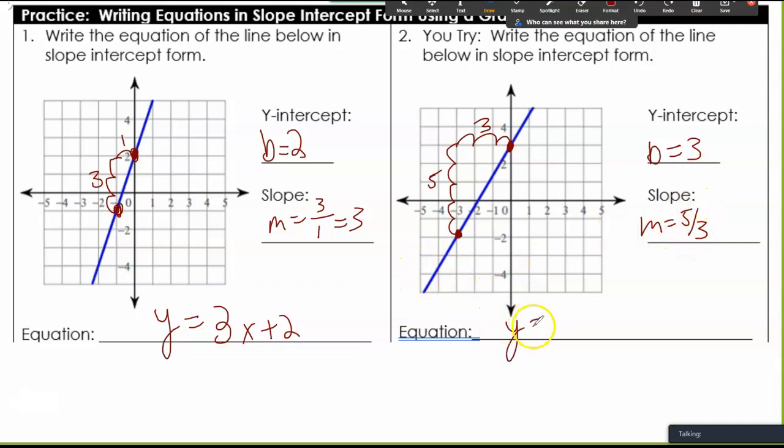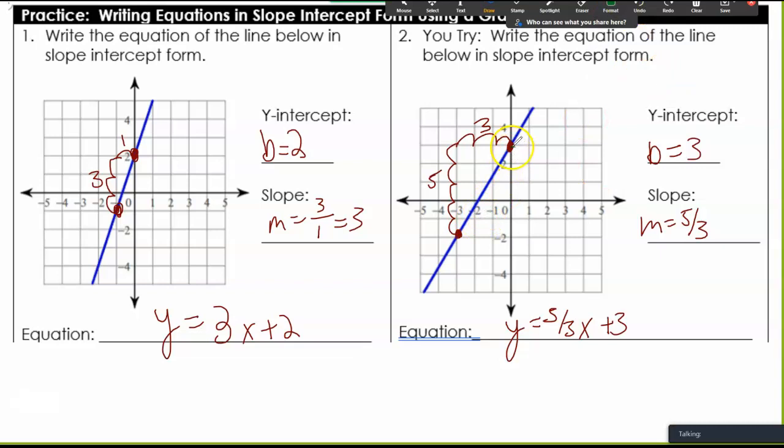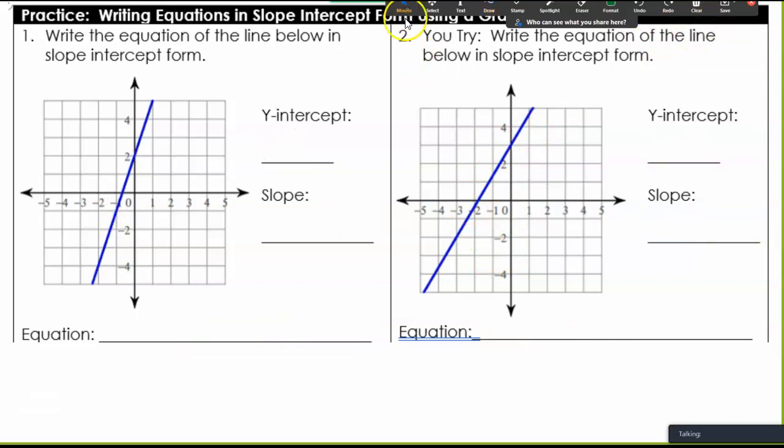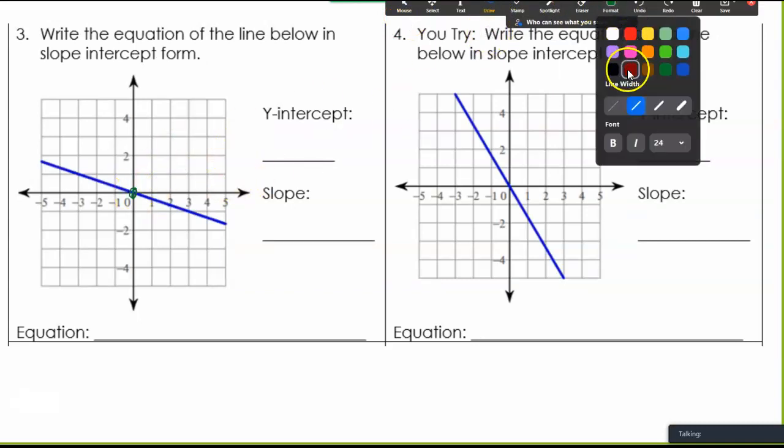So m equals 5 over 3, and I can't simplify that. If you did that by falling and then going to the left, you would have negative 5, negative 3. We saw five-thirds. So if we think of it differently, that's fine. We should have ended up with five-thirds.